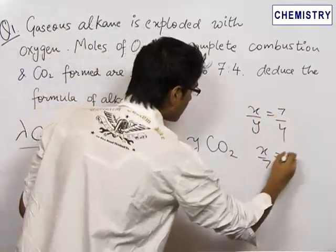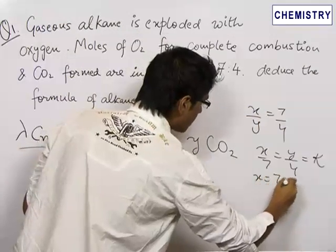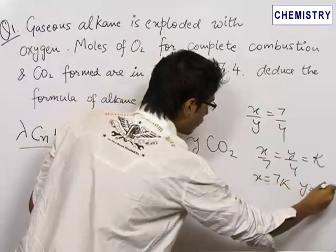So x upon 7 is equal to y upon 4. Let us assume this to be equal to k. So x equals 7k and y equals 4k.